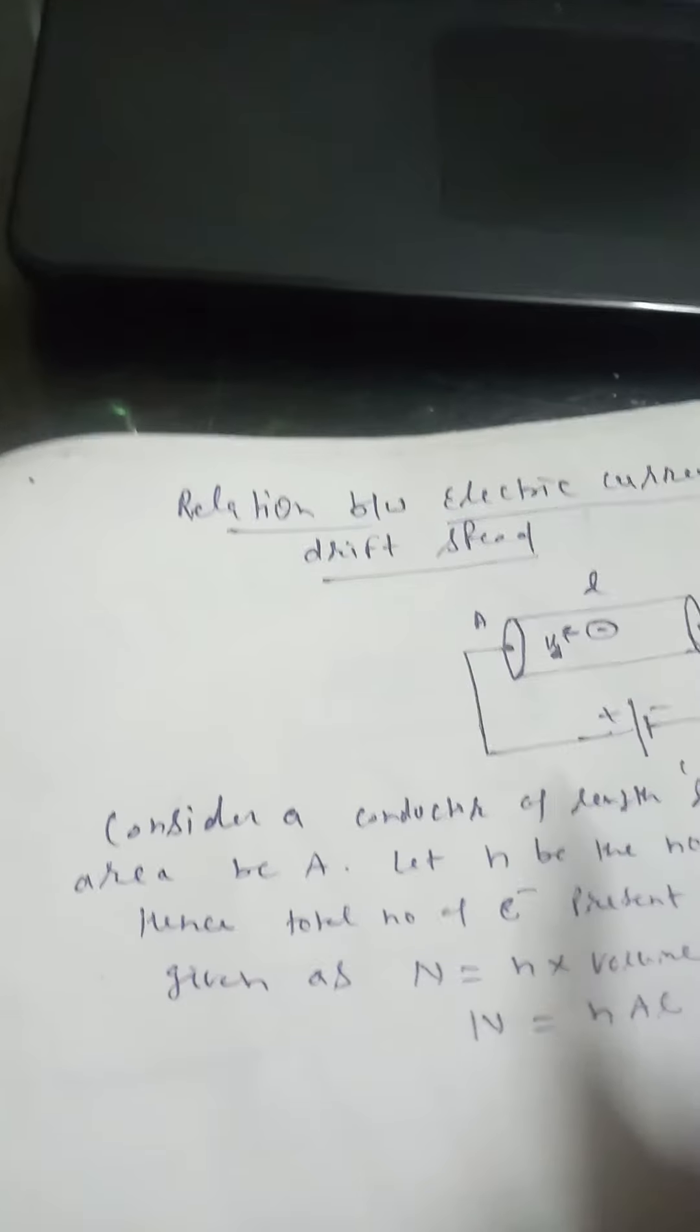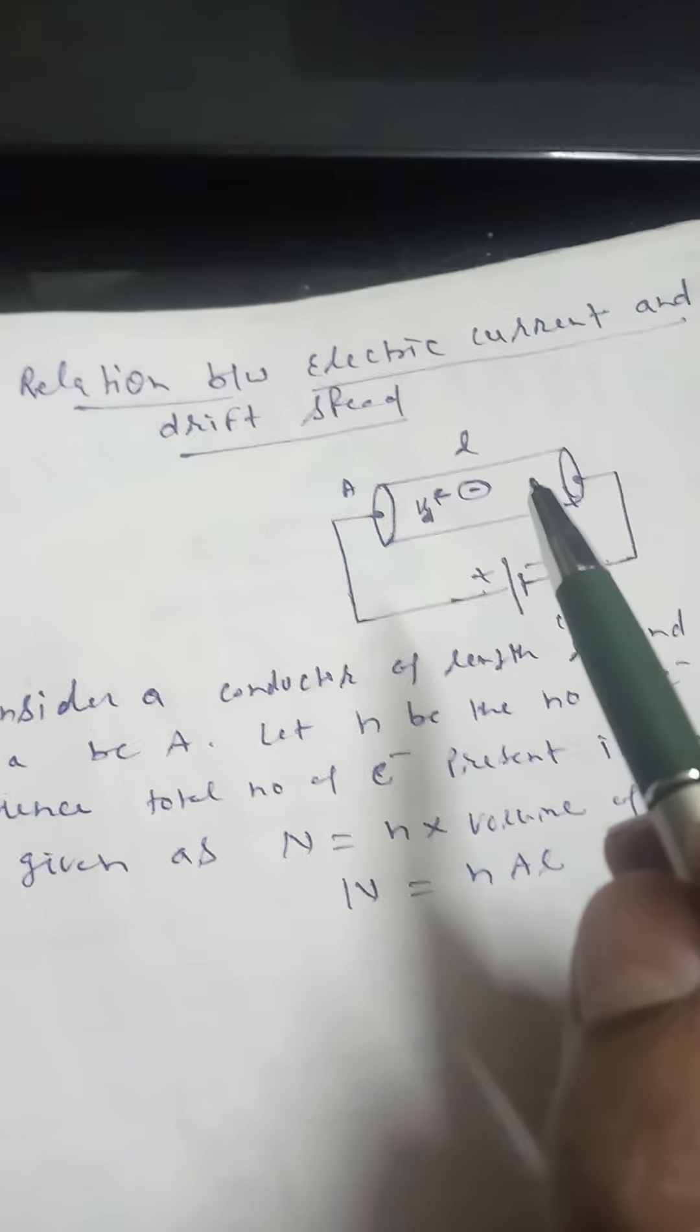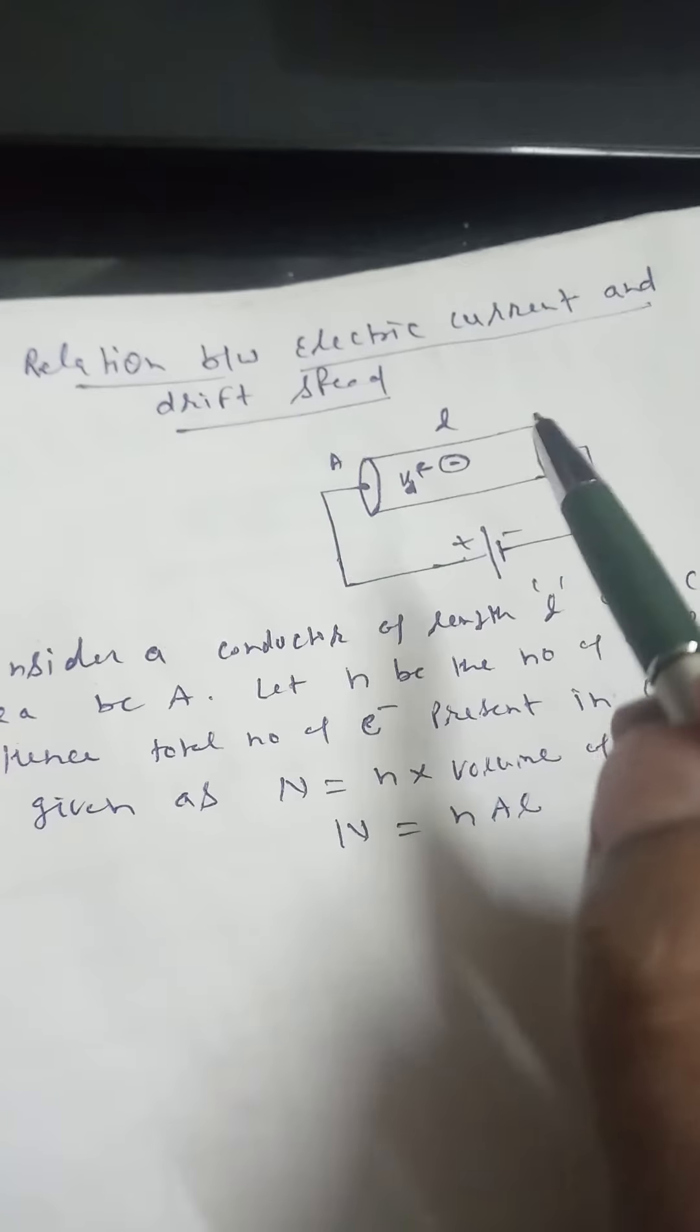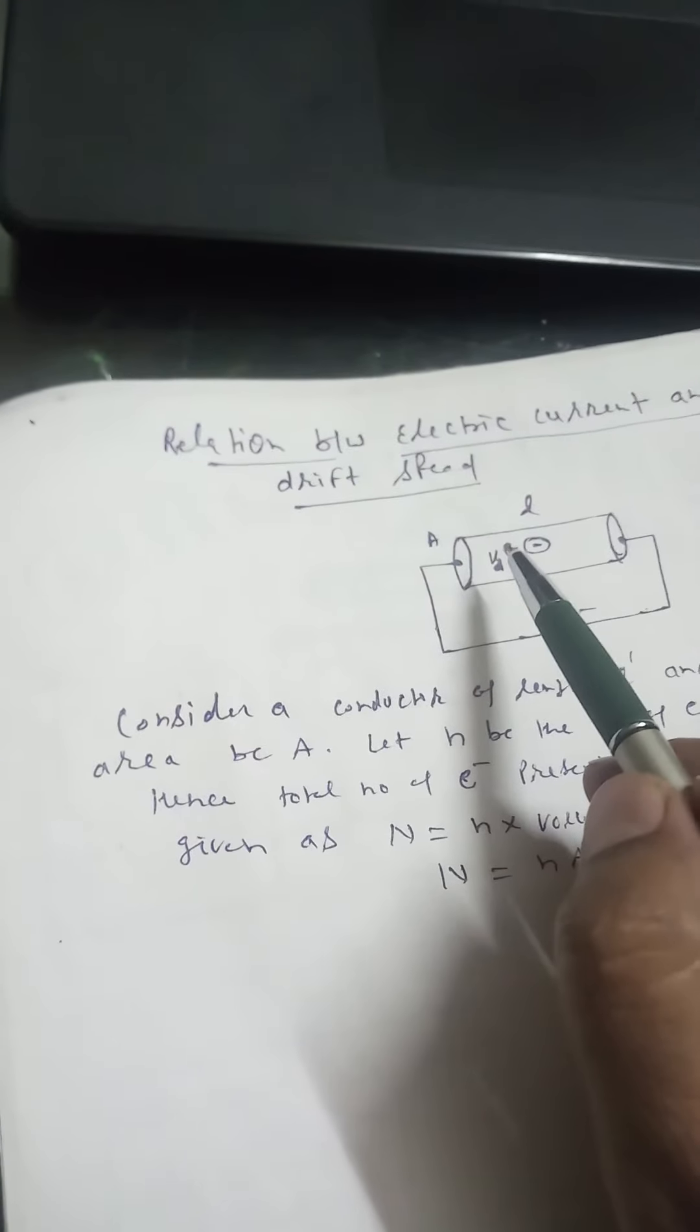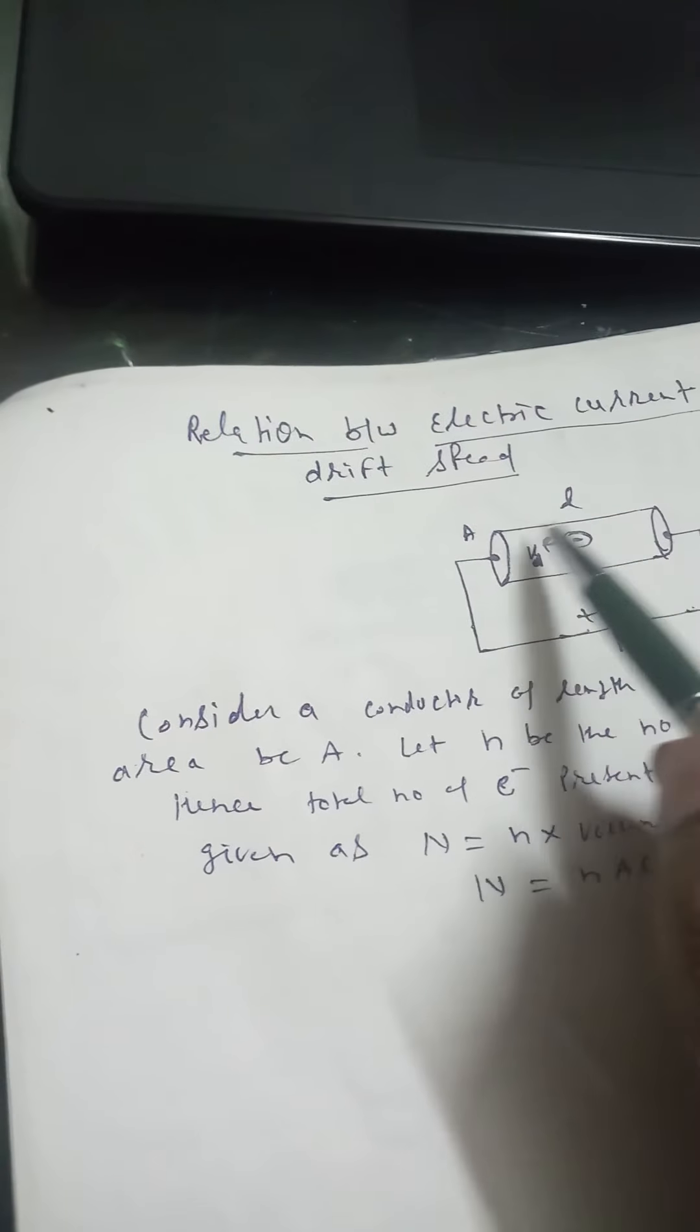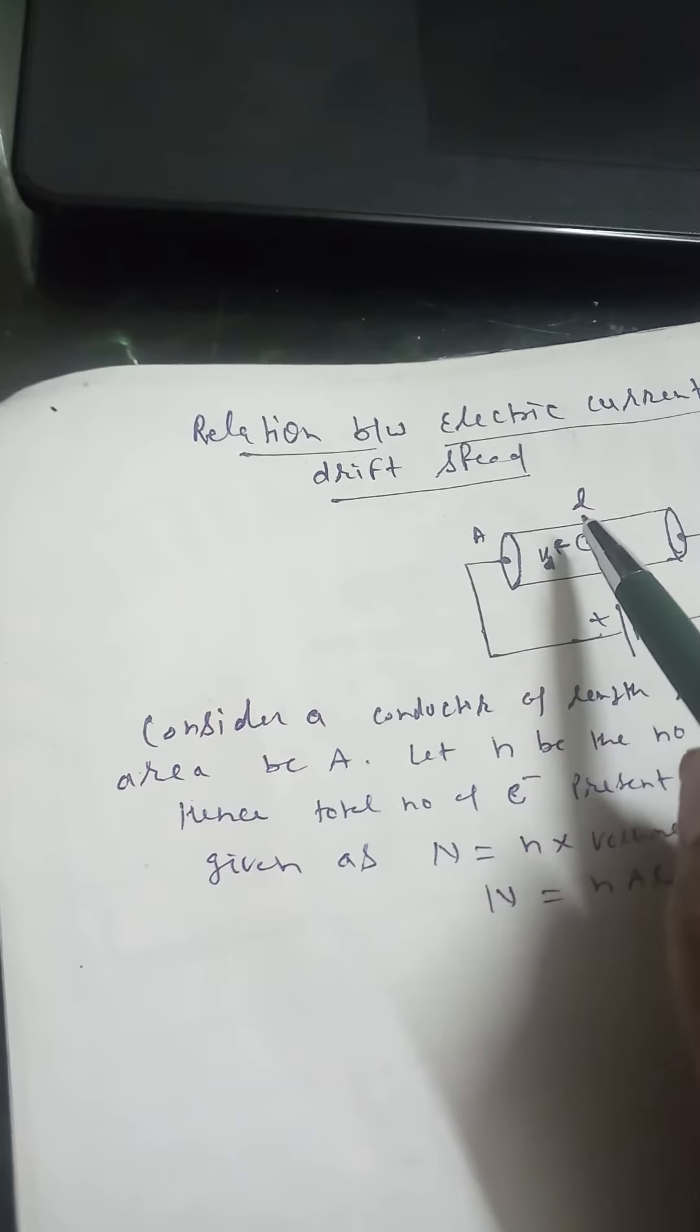Our next topic is relation between electric current and drift speed. Consider a conductor of length L and A be the cross-sectional area of that conductor.